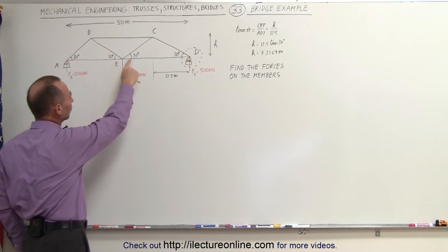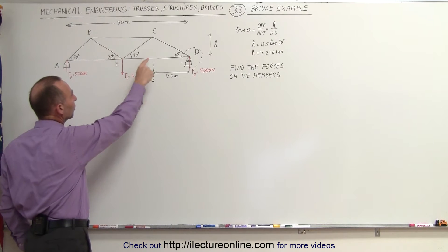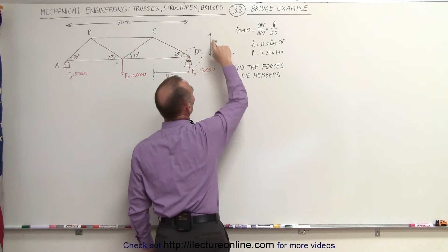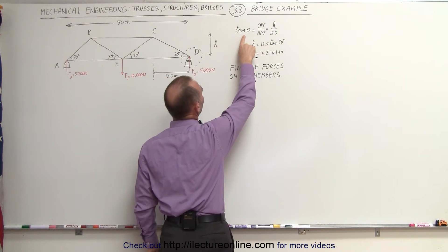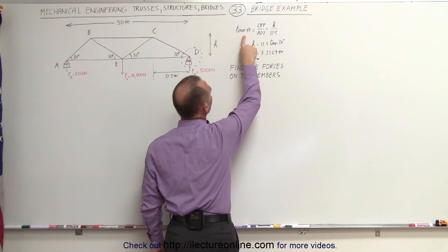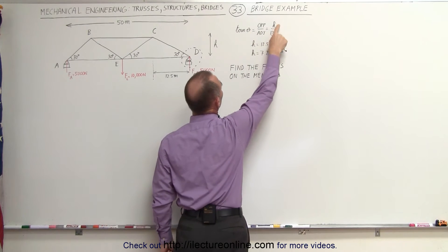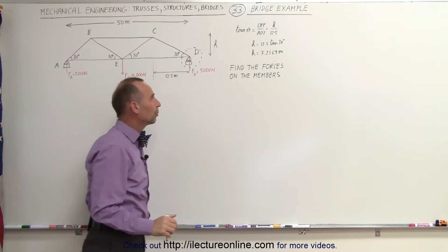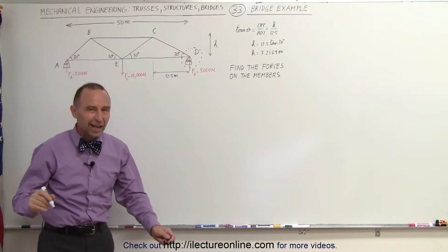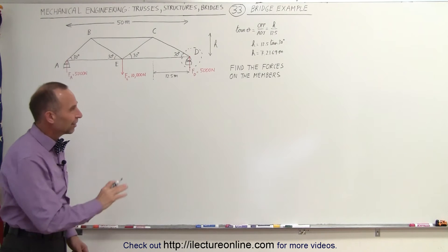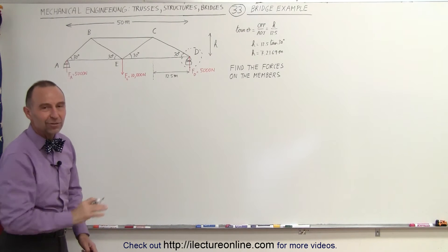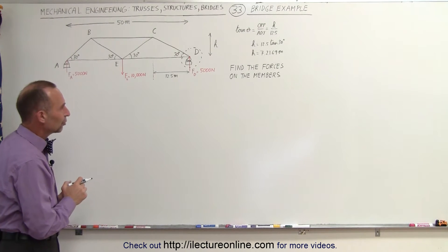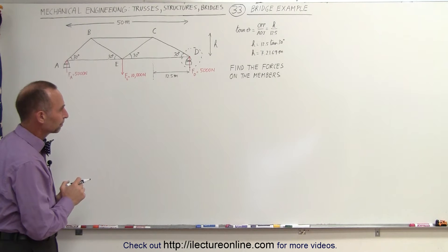Also notice the angle is 30 degrees, which allowed me to find the height of the bridge. The tangent of theta equals h over 12.5, so h is equal to 7.2169 meters. I kept extra significant figures to avoid round-off errors when using that number later.